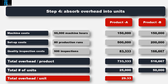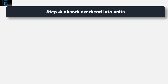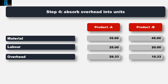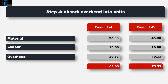Now that the overhead cost per unit has been calculated, we can add this to the direct material and labour costs to derive the cost per unit of production. The total cost per unit of Product A is $89.33, while the total cost per unit of Product B is $75.33.